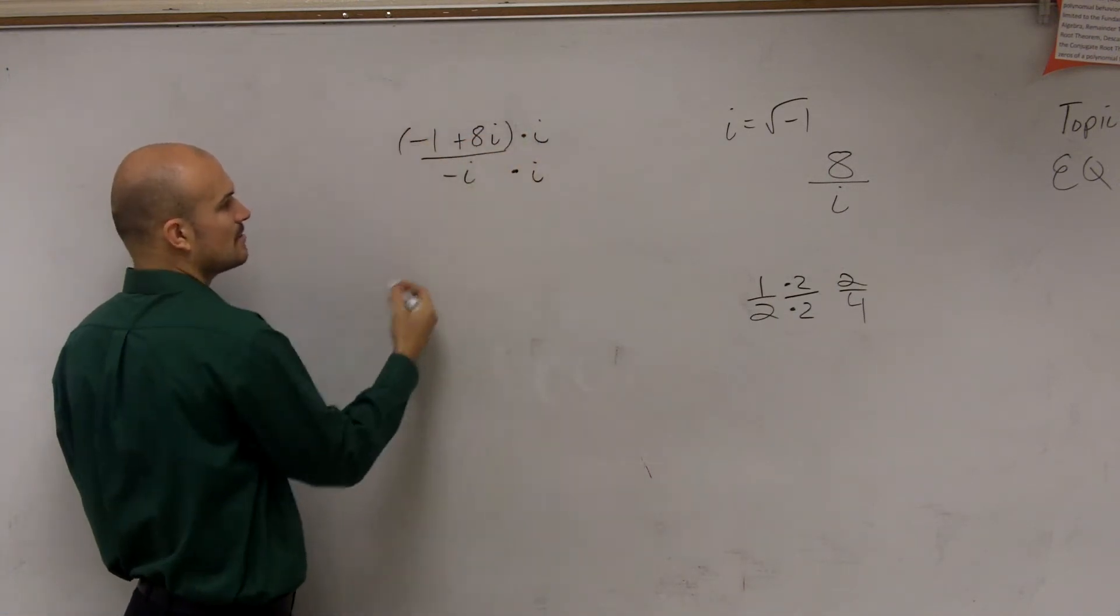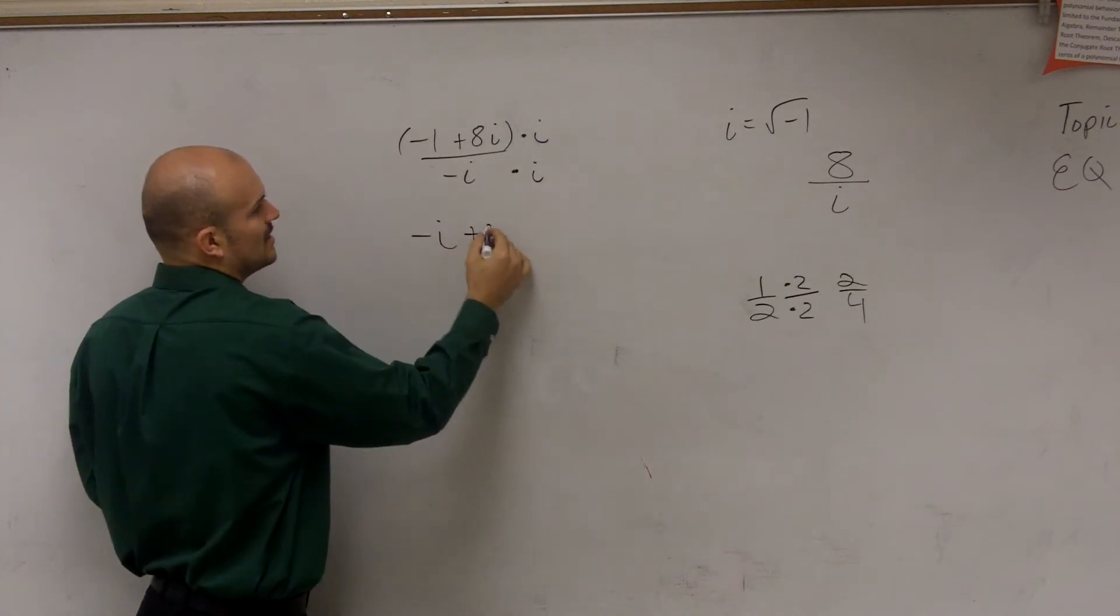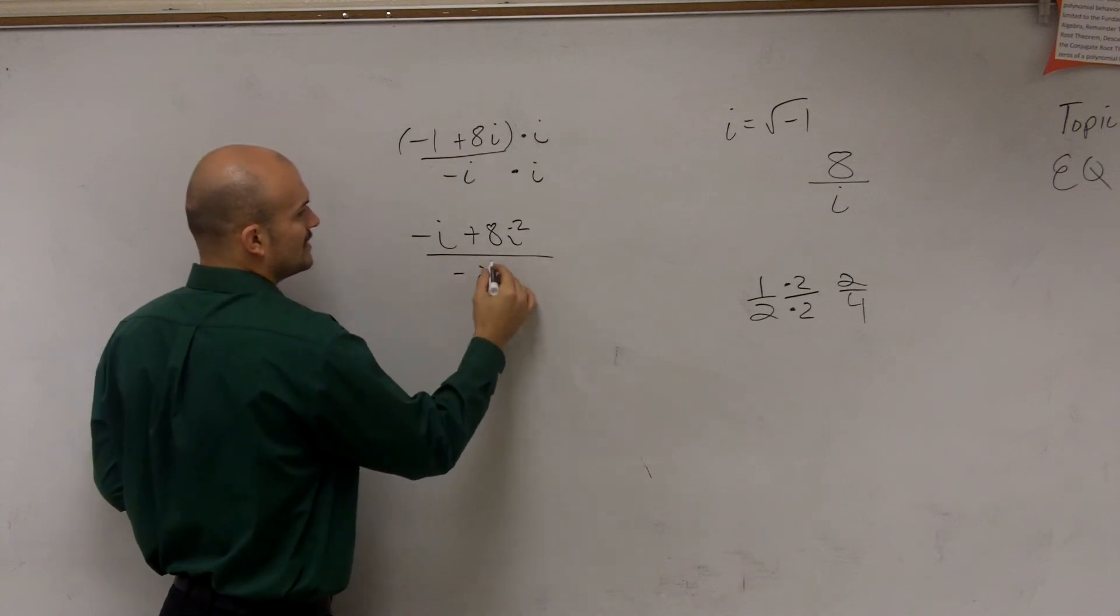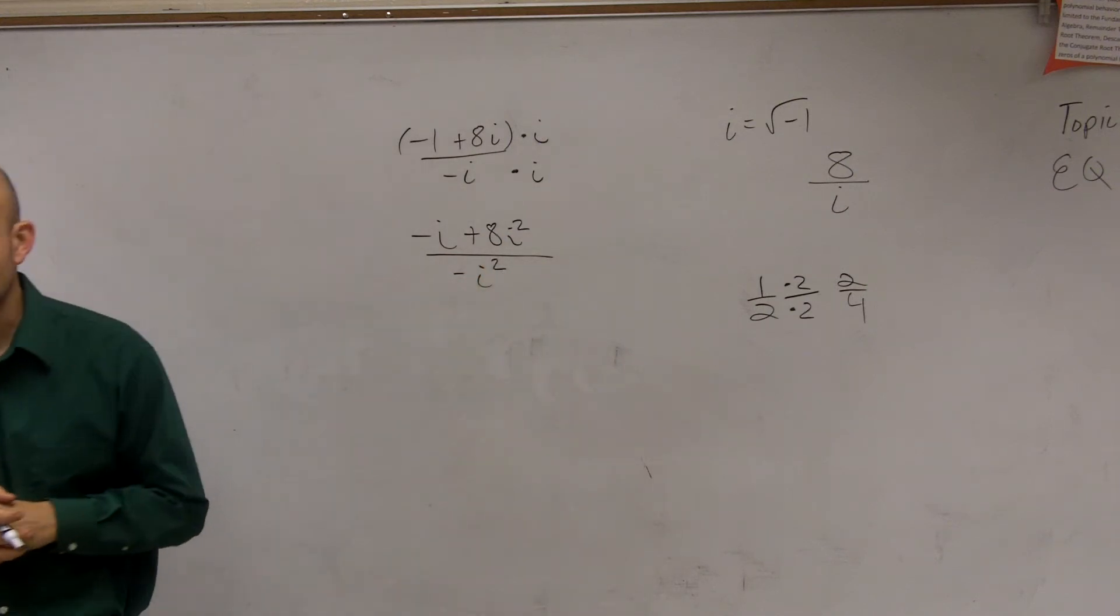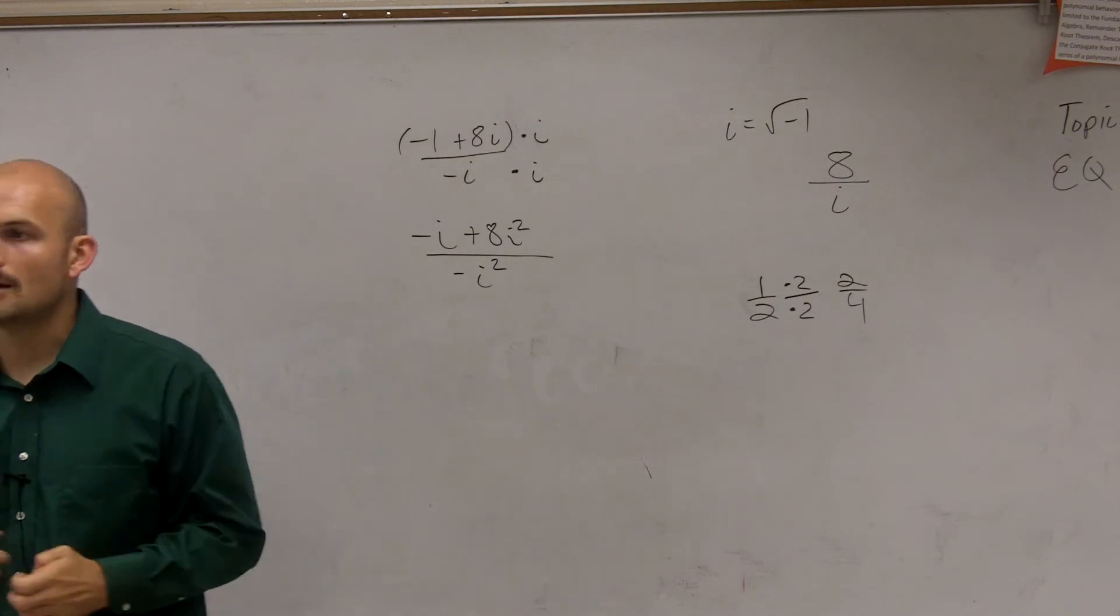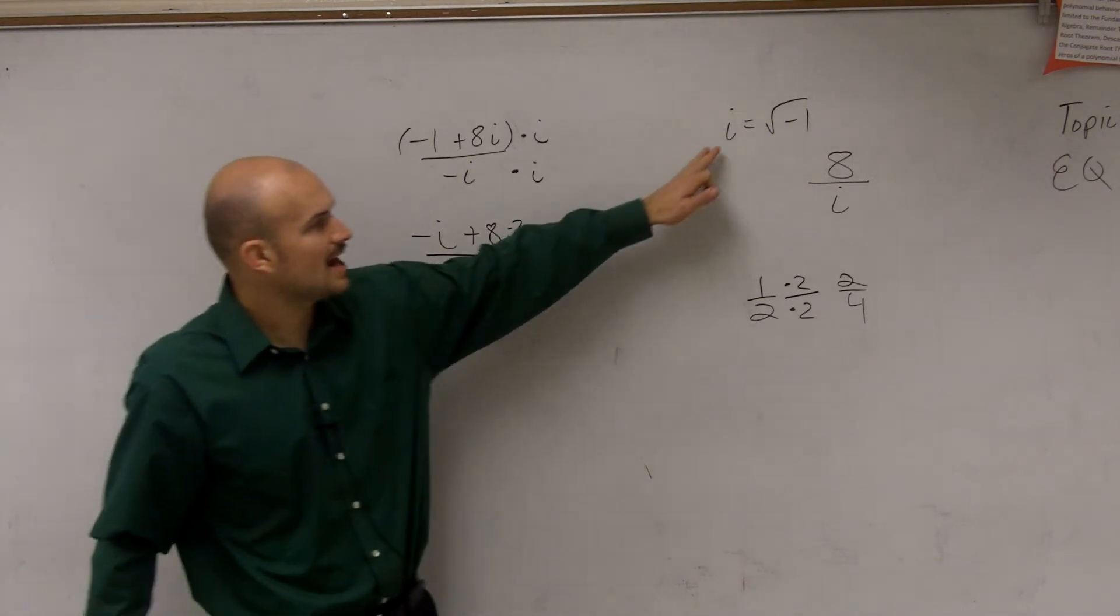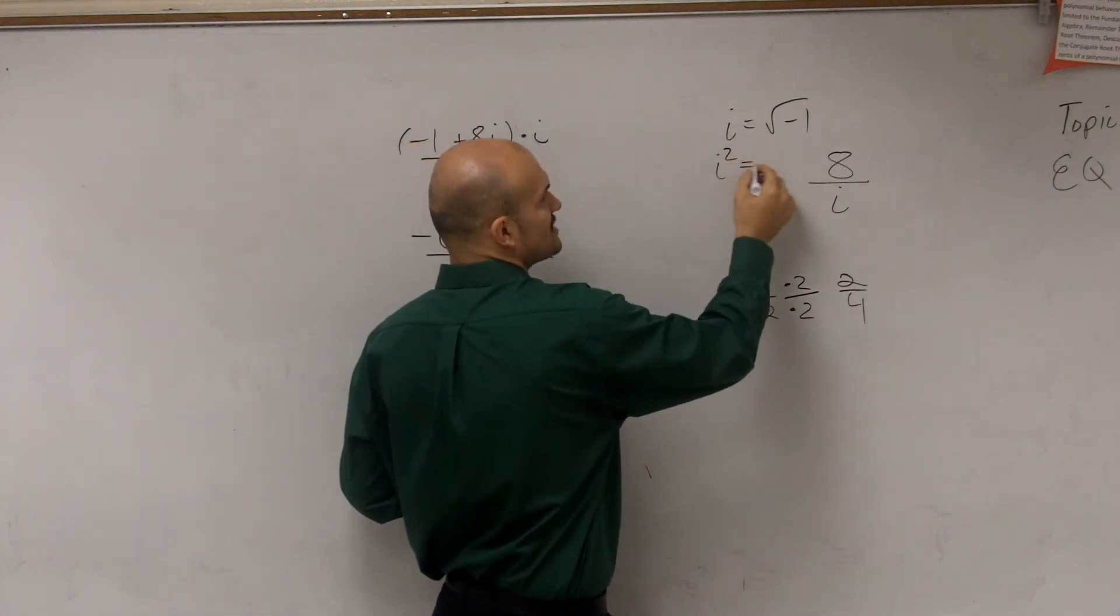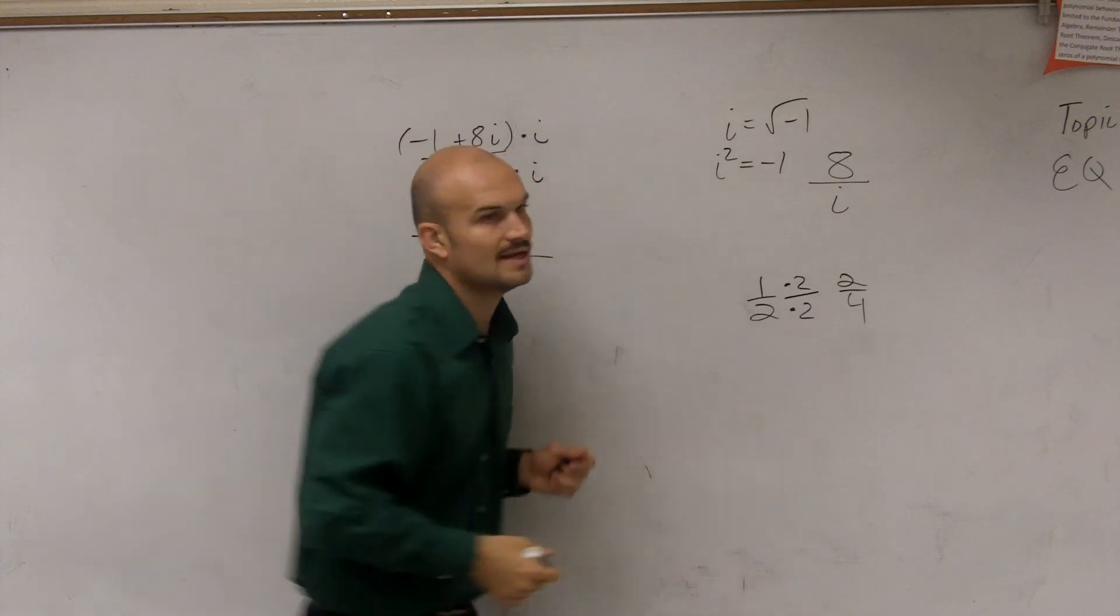So I put parentheses around here. So therefore, I'm going to have negative i plus 8i squared over negative i squared. Right? Just do multiplication just like you're doing variables. However, when we talked about i representing the square root of negative 1, remember the next thing we said, i squared represented negative 1.